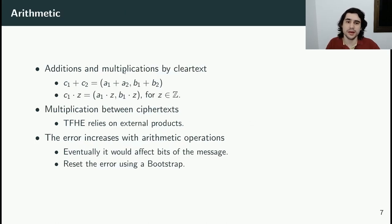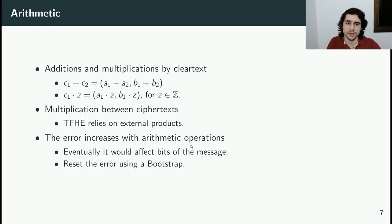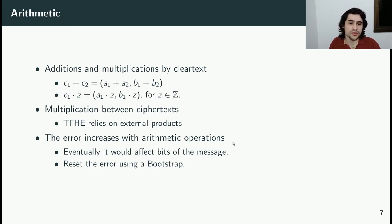Additions and scalings can be performed directly — we simply add each element of the pair, or multiply each element by an integer. TFHE does not support multiplications between ciphertexts; it relies on external products with other types of ciphertexts. The important thing to note is that arithmetic operations increase the error, and eventually it would affect significant bits of the message. If we want to continue computation, we need to perform a bootstrap procedure, which resets the error to some predefined amount.